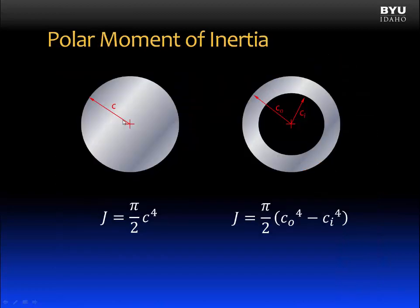Now, let's talk about J. J is the polar moment of inertia. For a solid circular cross-section, J is equal to pi divided by 2 times C to the fourth power. C is the radius. If we have a tubular cross-section, then J is equal to pi over 2 times the outer radius to the fourth power minus the inner radius to the fourth power.